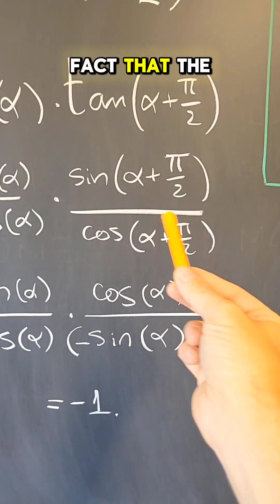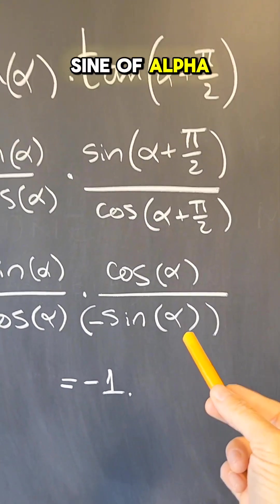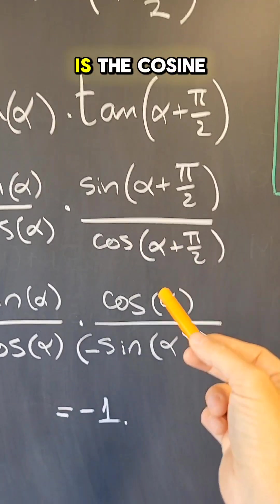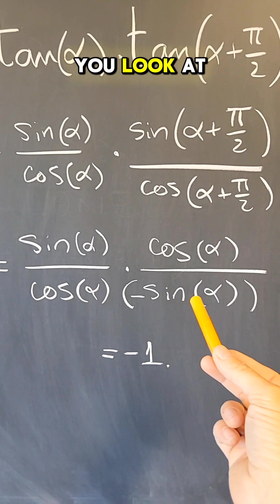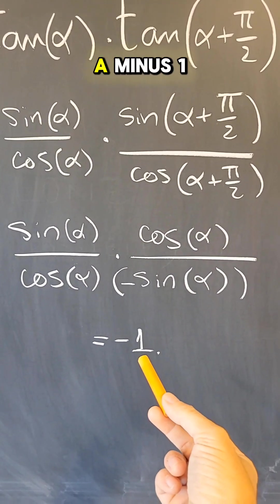And now we can use the fact that the cosine of alpha plus 90 is minus the sine of alpha. And the sine is the cosine of alpha. And now when you look at this, this cancels out, the sine cancels out, and I get a minus one.